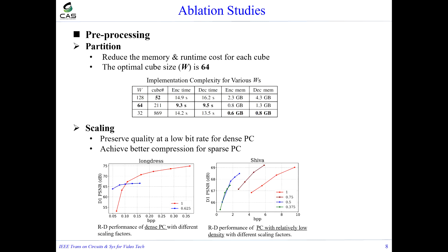Next, I will introduce ablation studies examining various aspects of the proposed method. In pre-processing, partitioning reduces memory and runtime cost, and the optimal cube size is 64. Scaling preserves quality at low bit rates, as shown in the left RD curves. Furthermore, for point clouds with relatively lower density, scaling makes the points denser and enables better compression, as shown in the right RD curves.